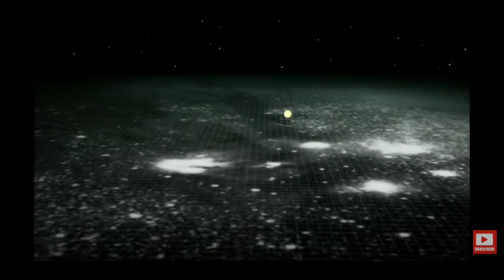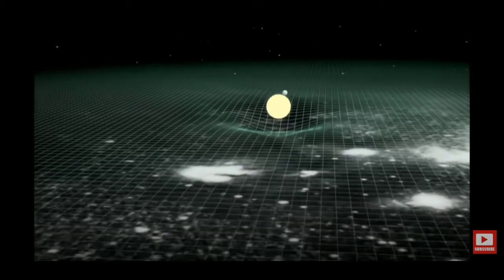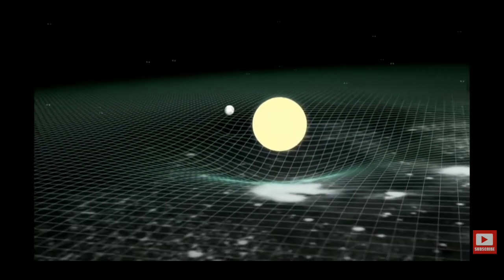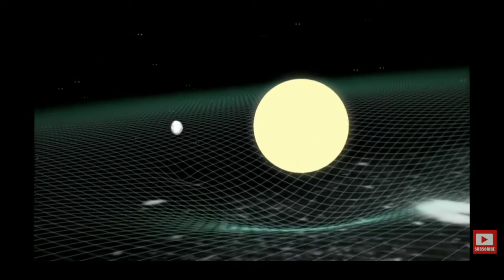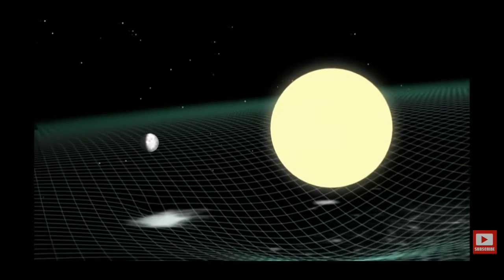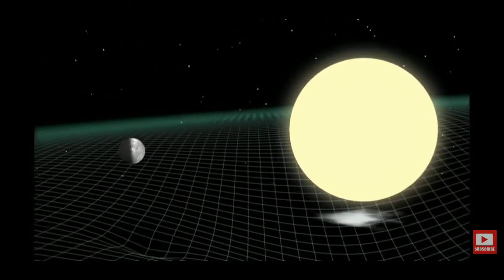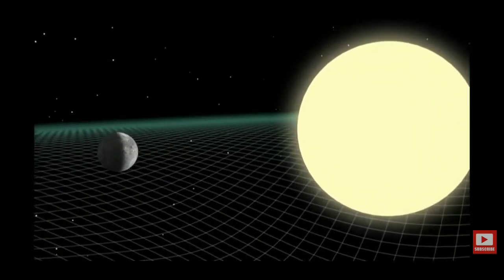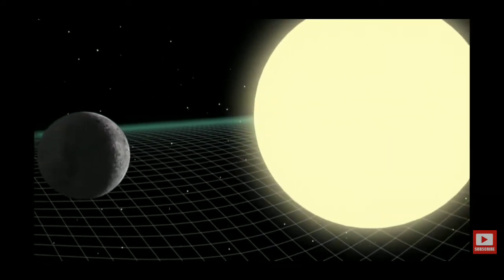But the elephant in the room is that we still don't know what gravity really is. Yes we have Newton and Einstein's laws which predict with amazing accuracy the effects of gravity, but these theories don't tell us how gravity works or what the mechanism is that makes mass bend space-time. All we know is that gravity is a consequence of mass—the greater the mass, the greater the bending of space-time and hence the greater the gravity.